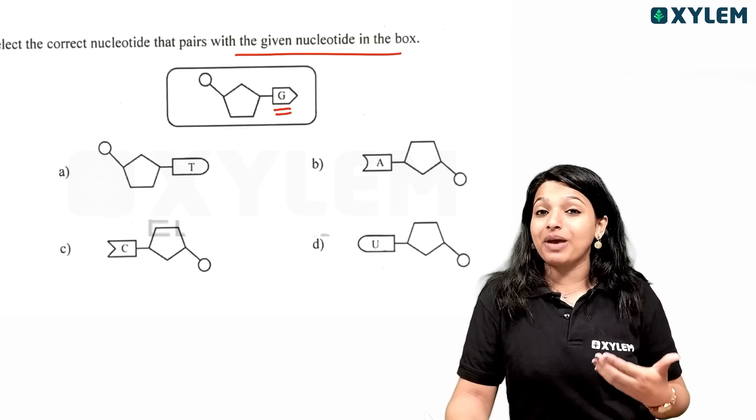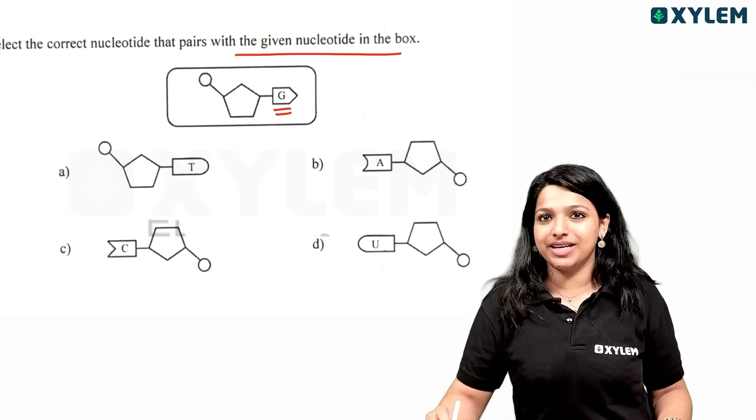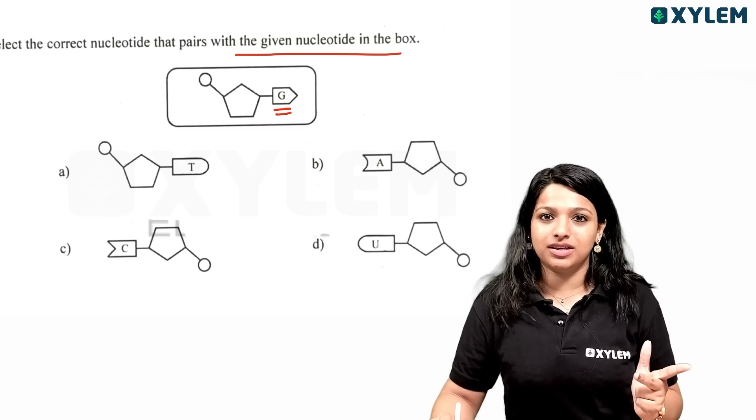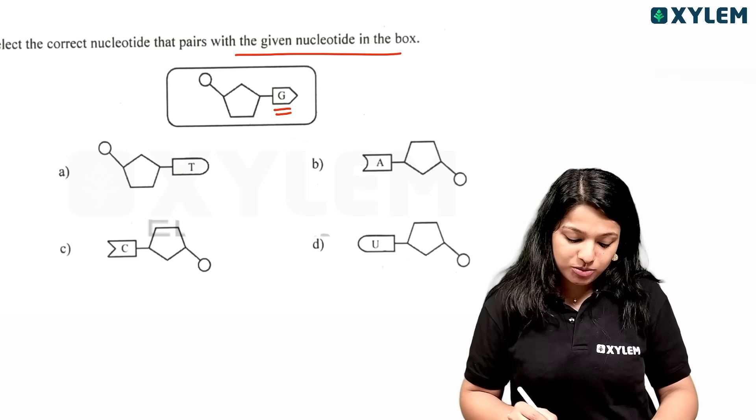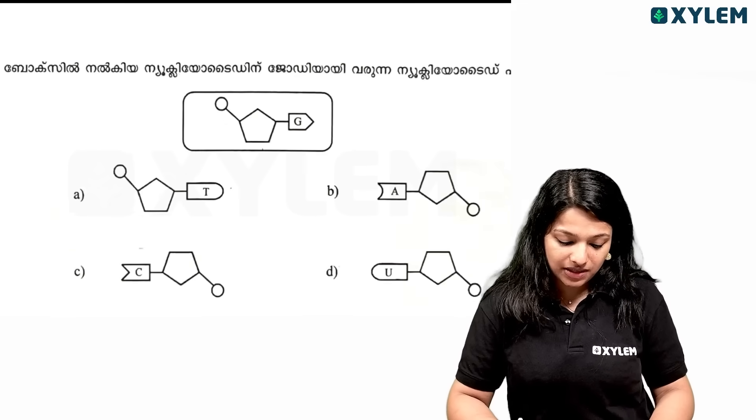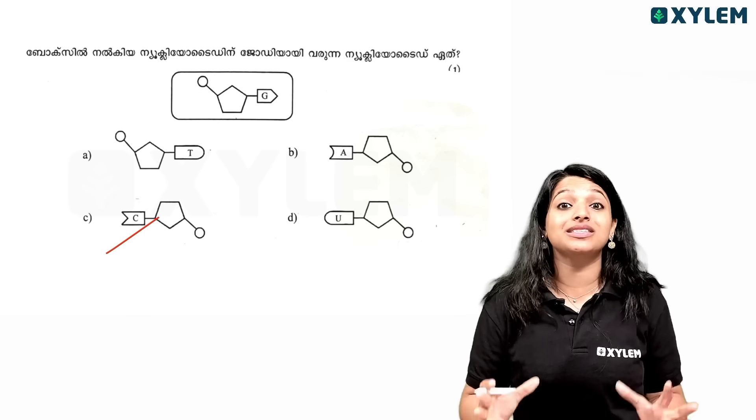Adenine pairs with thymine. Guanine pairs with cytosine. So option C is the answer. For nitrogen base pairing, adenine and thymine have a double bond, and guanine and cytosine have a triple bond.